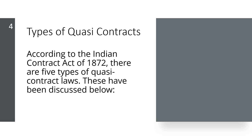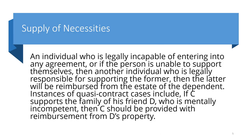According to the Indian Contract Act 1872, there are five types of quasi-contract laws. The first one is supply of necessities. If you are supplying somebody the necessary items which the other person is not able to supply themselves, you can do it and later recover the same amount from that person's property. An individual who is legally incapable of entering into any agreement, or who is unable to support themselves, can be supported by another, who will be reimbursed from the estate of the dependent. For instance, if C supports the family of his friend D who is mentally incompetent, C should be reimbursed from D's property.